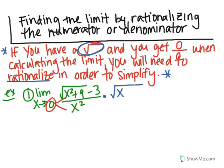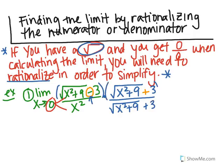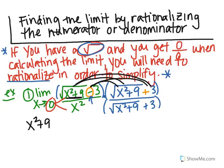You multiply the top and bottom by the same expression — you're multiplying by 1. When you rationalize, the sign changes: if it's minus, it becomes plus. So I multiply both top and bottom by the conjugate. This becomes a foiling problem. When you foil, multiplying like roots cancels them, giving x squared plus 9. The middle terms — 3 times the root and minus 3 times the root — cancel. The last product is minus 9.